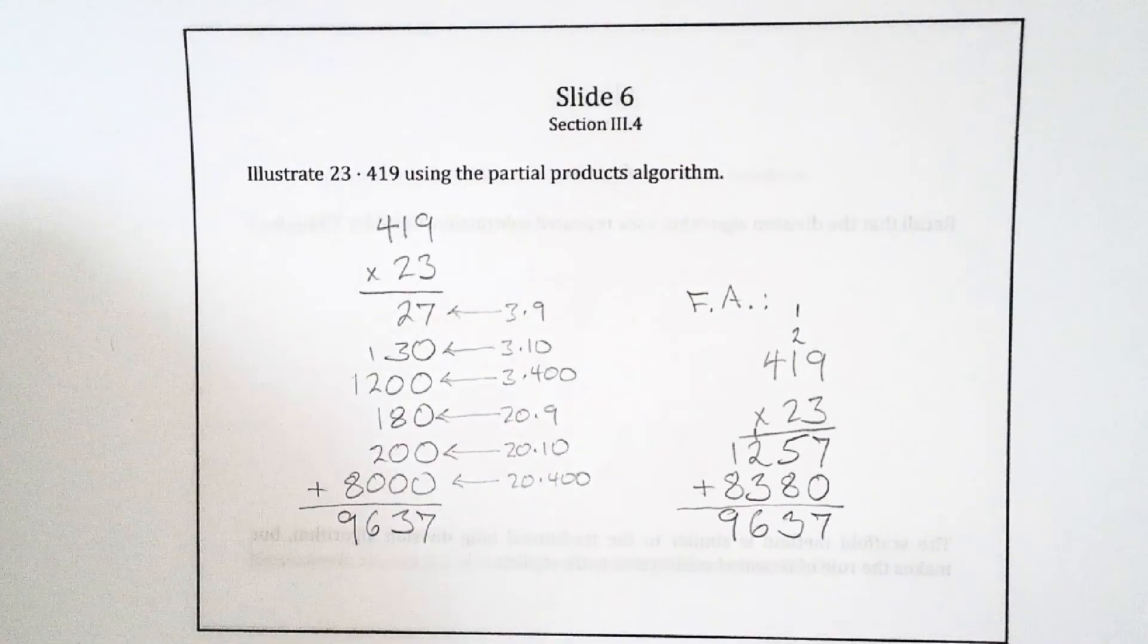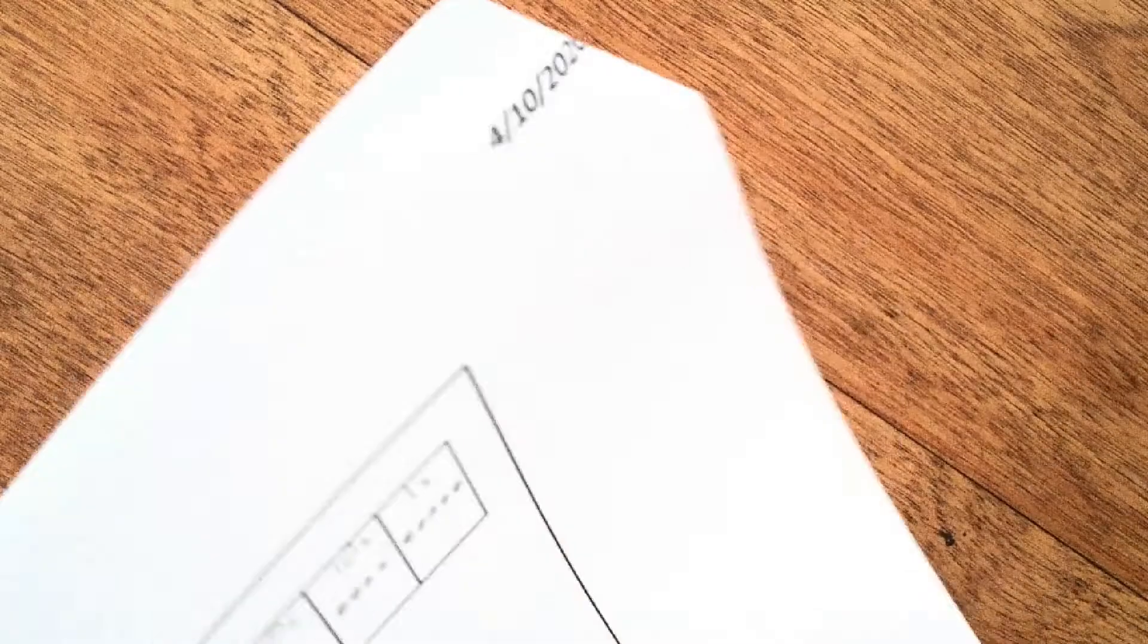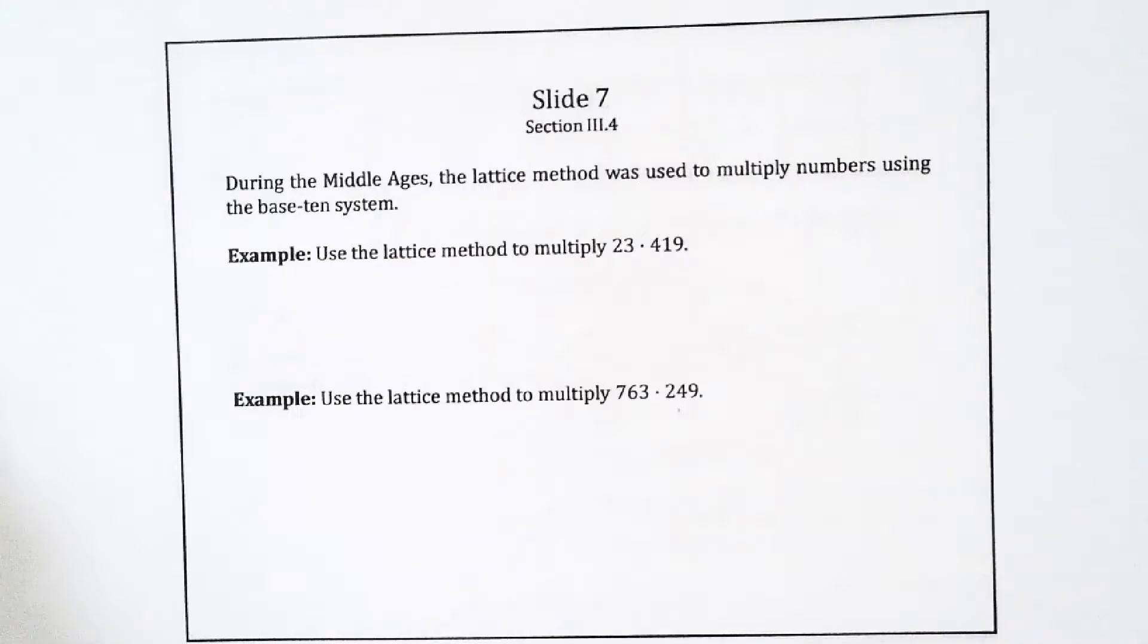And so I add those two numbers and we get the same thing. So you see what we're doing with the expanded notation or the partial products algorithm is exactly the same as what we're doing here. They're just broken up into more steps. Now, in the Middle Ages, they didn't do it exactly like this. They did something that was equivalent, but works a little differently.